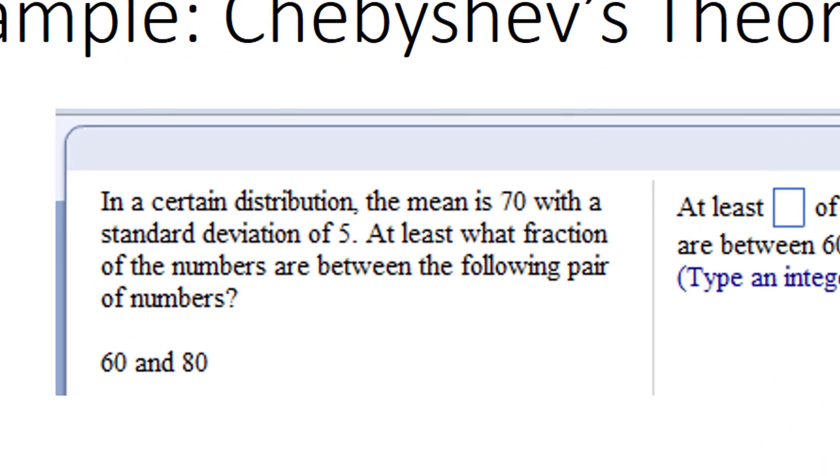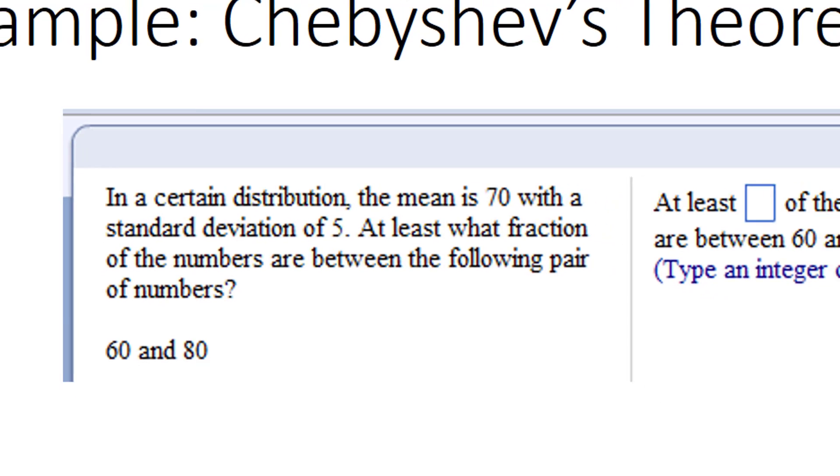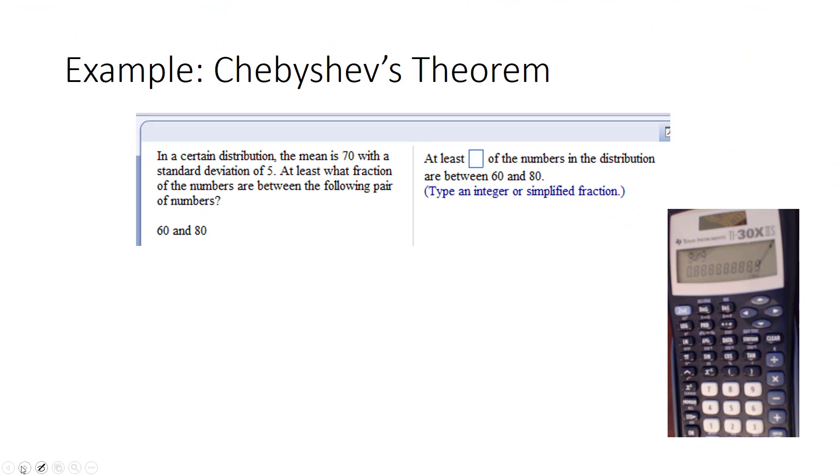It says, in a certain distribution, the mean is 70 with a standard deviation of 5. At least what fraction of numbers are between the following pair of numbers? When you see at least what fraction or at least what percentage, and they haven't told you that you have a normal distribution, then we're probably using Chebyshev's theorem. Now, to understand what information they're giving us about the distribution, I sketched a little picture. Now remember, I don't really know that the data looks this shape, but I just randomly drew a shape for the data so I can visualize it.